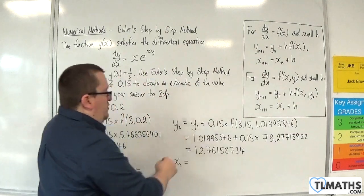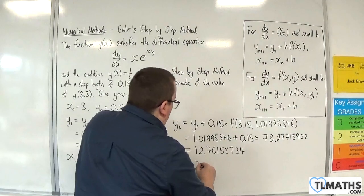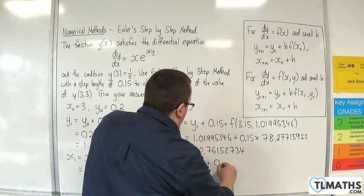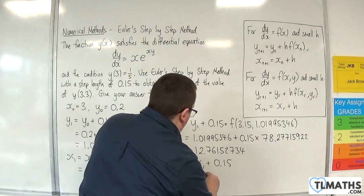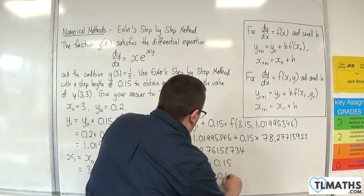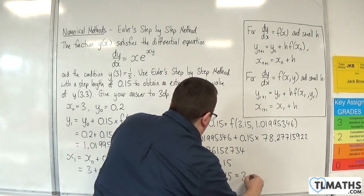Now x₂, the corresponding x value, is the previous x value plus the step length. So x₁ is 3.15, so plus the 0.15, is then 3.3.